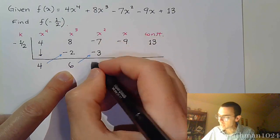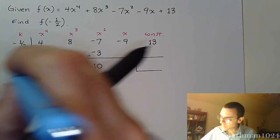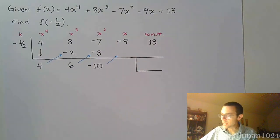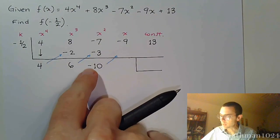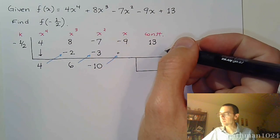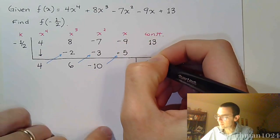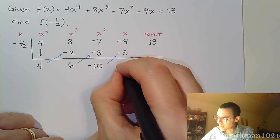So, we get negative 3. Combine these, we get negative 10. Multiply times negative 1 half. Negative times negative is positive. Put that positive there if it's going to help you with your signs. And half of 10 is 5. Combining these, we get negative 4.